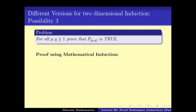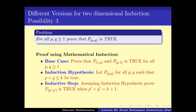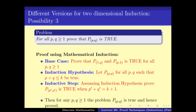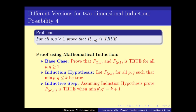A third version we saw applied in the last class uses the same base cases, but we induct not on p or q individually, but on p+q. If for all (p', q') with p'+q' < k it is true, can we prove it for p+q = k+1? Here we induct on p+q, and this is a valid version of induction. There is also a version where we induct on the minimum of p and q.